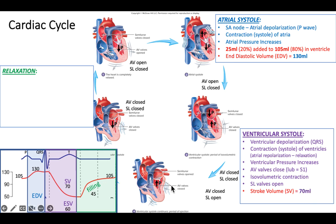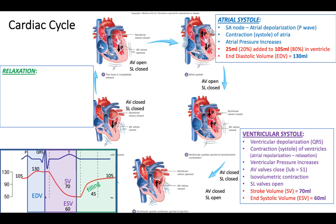Referring back to our volume graph, we were at 130 milliliters. We ejected the 70, so we removed 70 from 130 and are now left with 60 milliliters. That is known as end-systolic volume — the volume in the ventricle when it's done, or at the end of contraction. So we ejected the stroke volume.